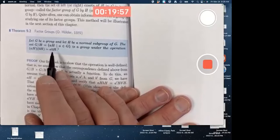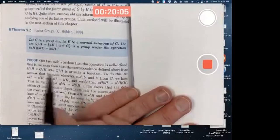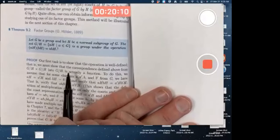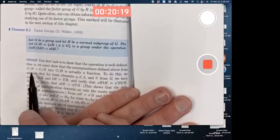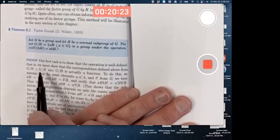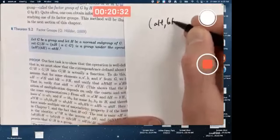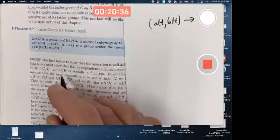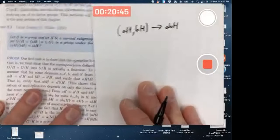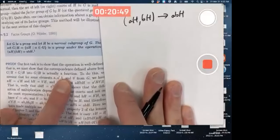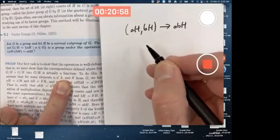Guess what? You got to show it's well-defined. This is just like the orbit stabilizer theorem proof in that sense. Our first task is to show that the operation is well-defined. That is, we must show that the correspondence defined above from this Cartesian product to this set. You're taking an arbitrary ordered pair where the elements are cosets and mapping it to some coset. It's just a fancy way of talking about the operation we're defining, the binary operation. Got to show it's actually a function. Why? The same reason as with the orbit stabilizer theorem—because the same coset could have different representatives.